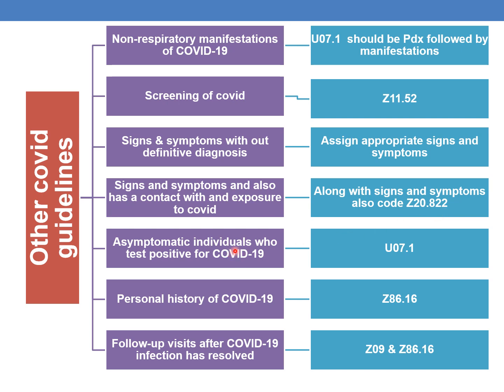For asymptomatic individuals who test positive for COVID-19, the regular U07.1 code must be given. Even though the patient is asymptomatic, if the test result is positive, we must consider this a confirmed case and code U07.1. For personal history of COVID-19 infection, the code is Z86.16. For follow-up visits after COVID-19 infection has resolved, assign Z09 and history of COVID code Z86.16.